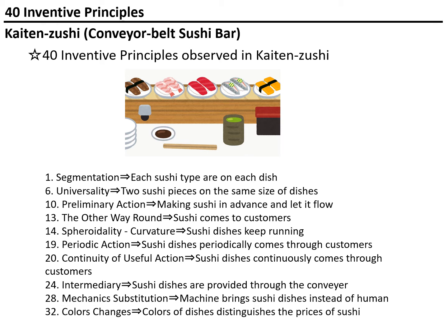In a normal sushi restaurant, they start making sushi after receiving an order from a customer. But in kaiten zushi, they make sushi in advance and let it flow. The other way around: sushi comes to customers. If a restaurant owner wants to save costs, sometimes customers come to pick the food up — but here, sushi comes to customers. Spheroidality/curvature: sushi dishes keep running. Periodic action: sushi dishes periodically come through to customers, circulating on a circle, so even if you miss a sushi, it comes back after a certain interval.